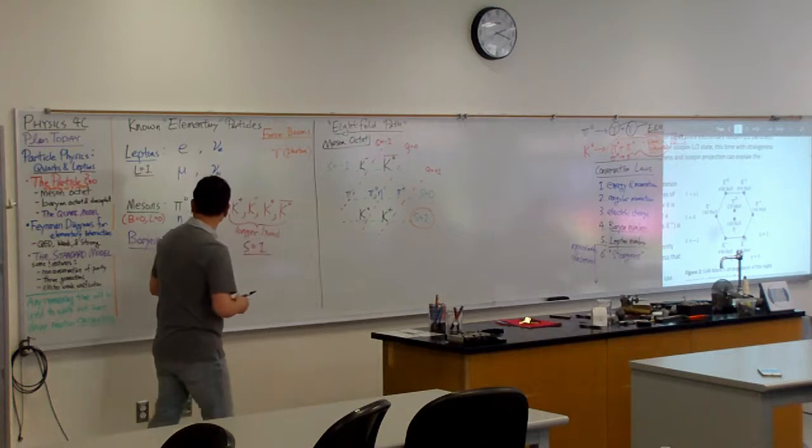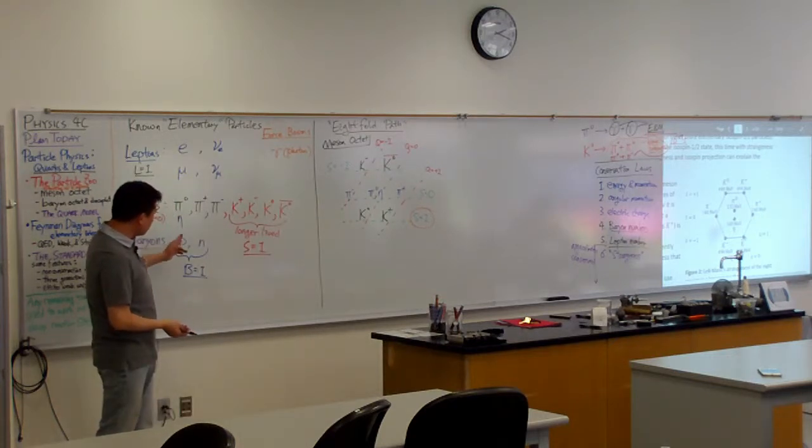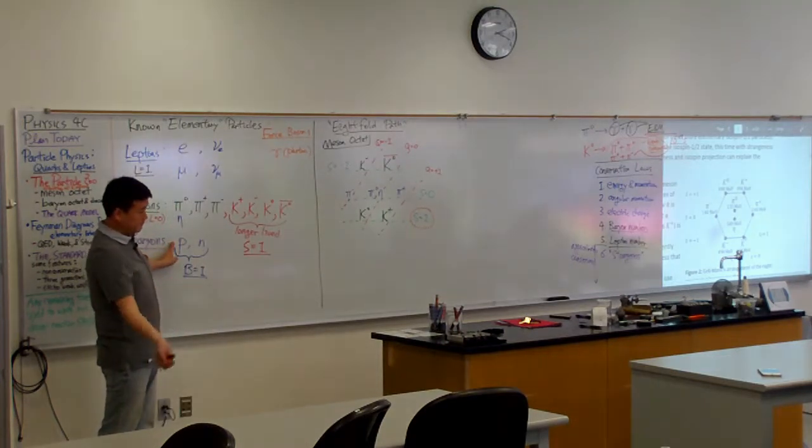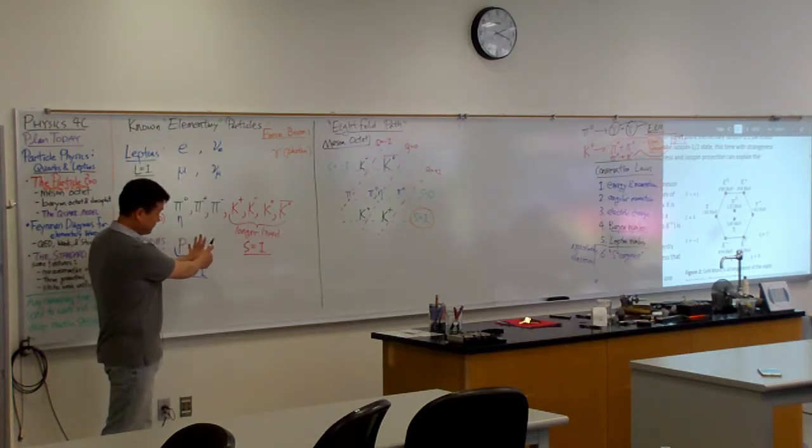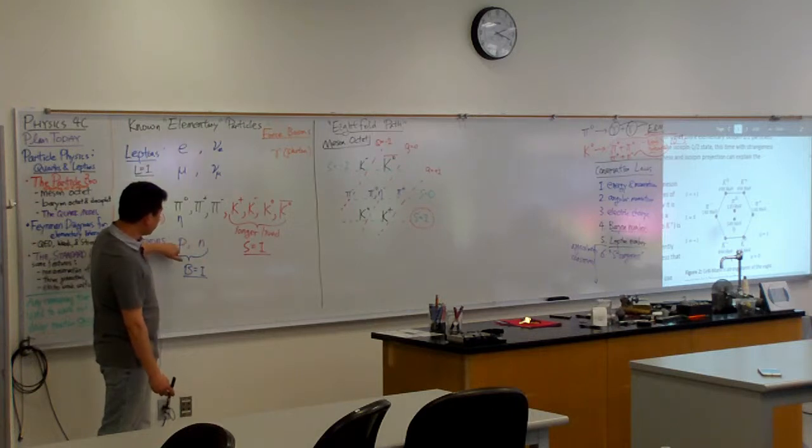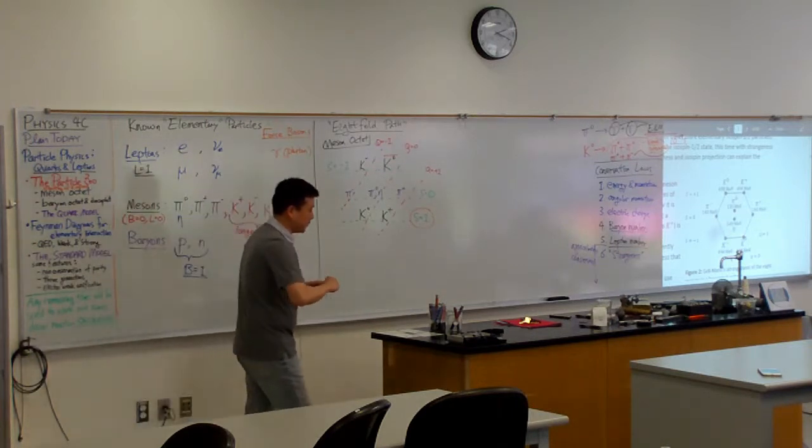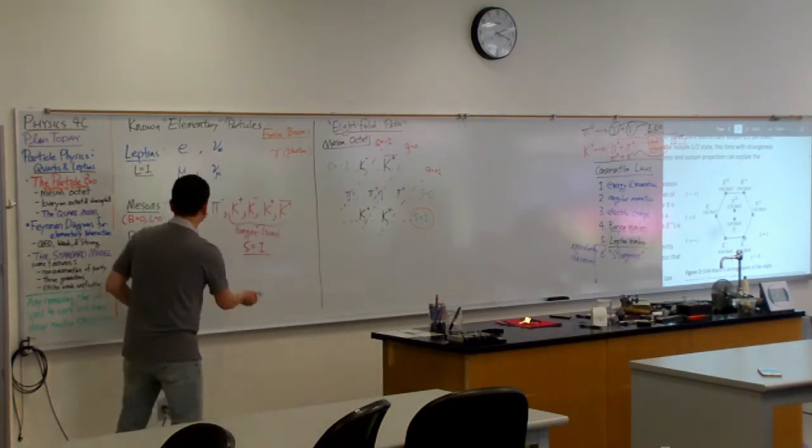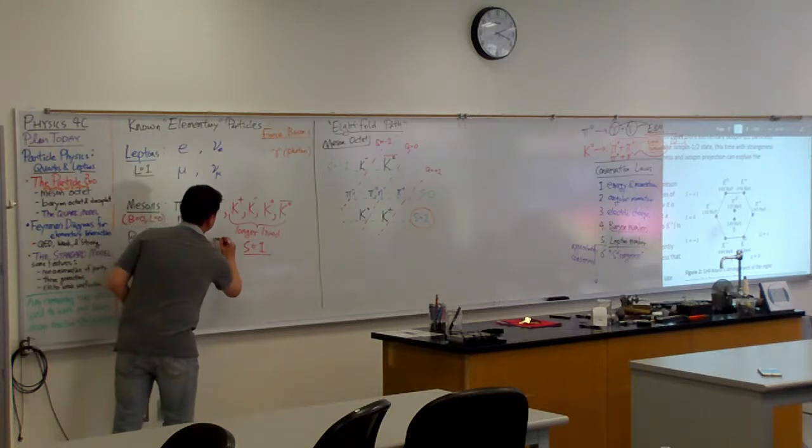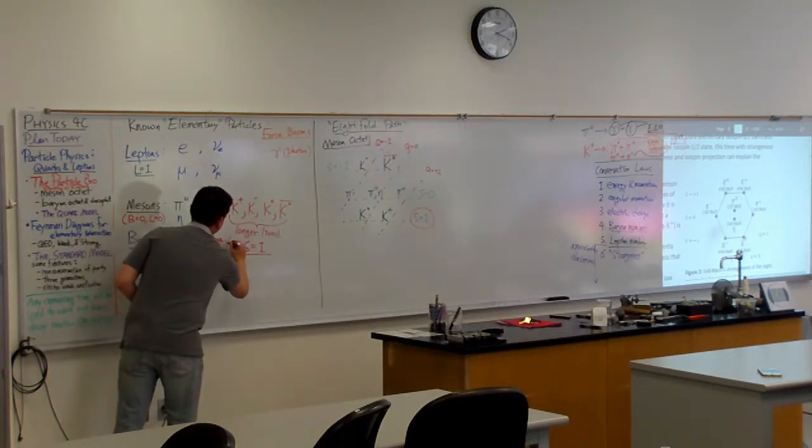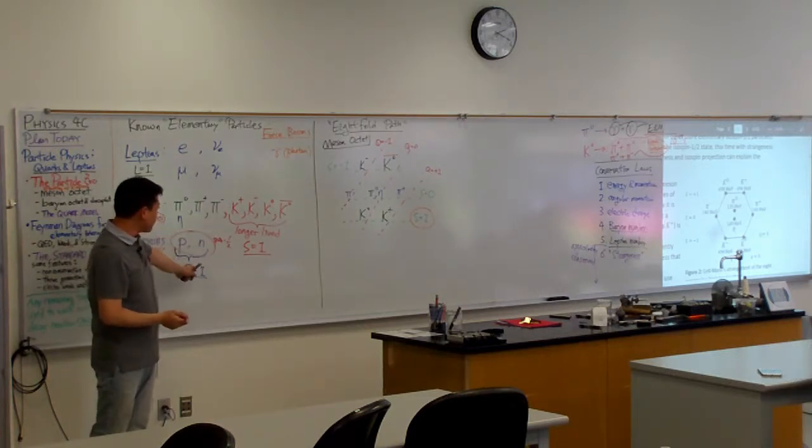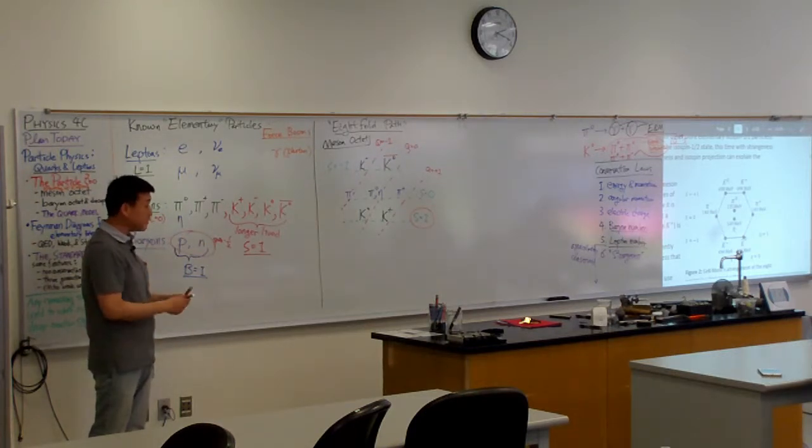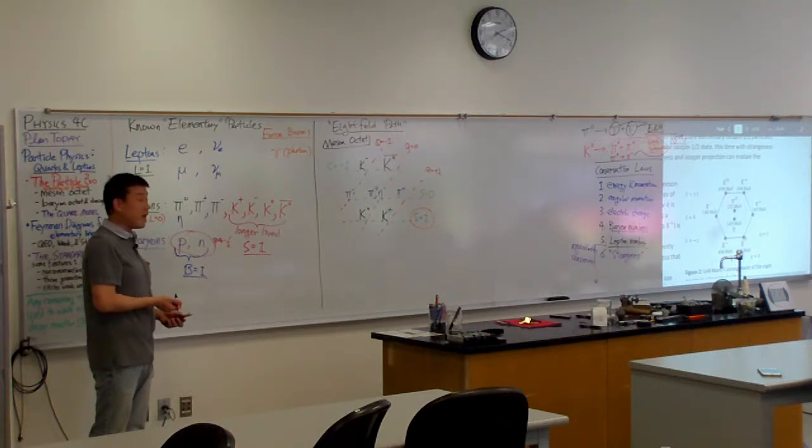So far you guys have learned about two baryons, right? We are going to talk about six more of these. So these are actually a very particular type of baryon. These are the baryons with spin one half.